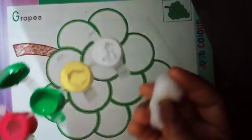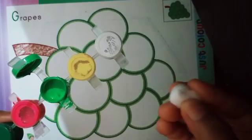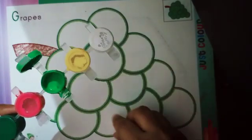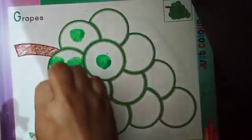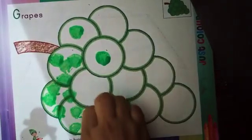I am using light green color, you can also use dark green. Take some cotton, yes, do like this. Now dip inside the color, dip inside the color and do, yes, like this. Cotton dabbing, yes beta, do like this.